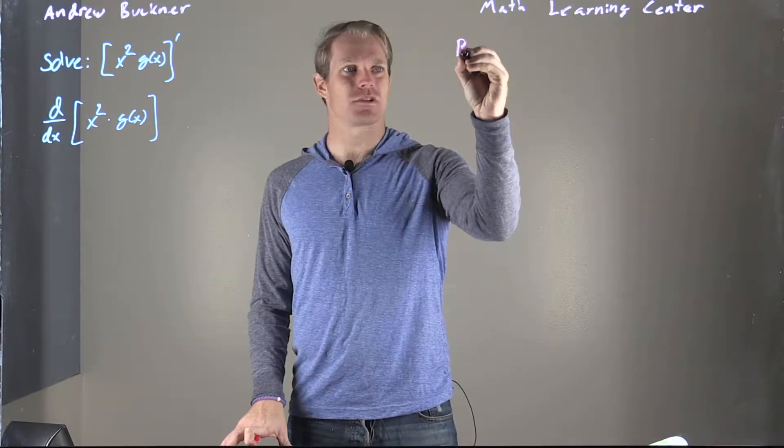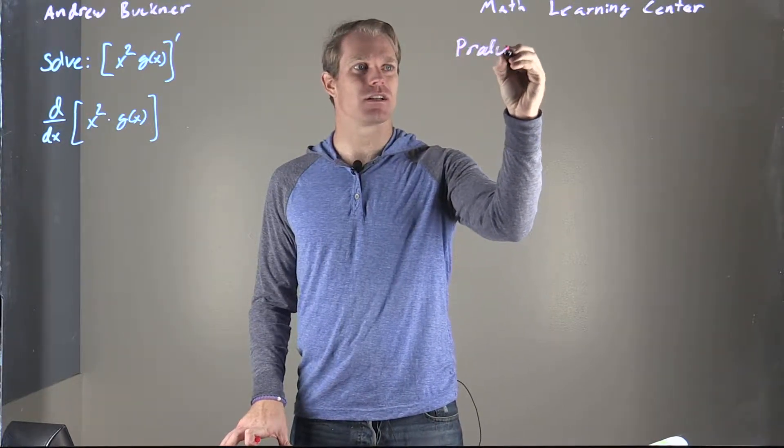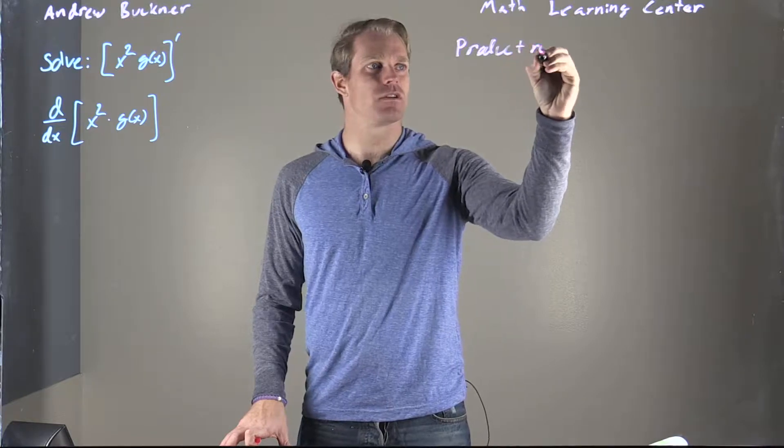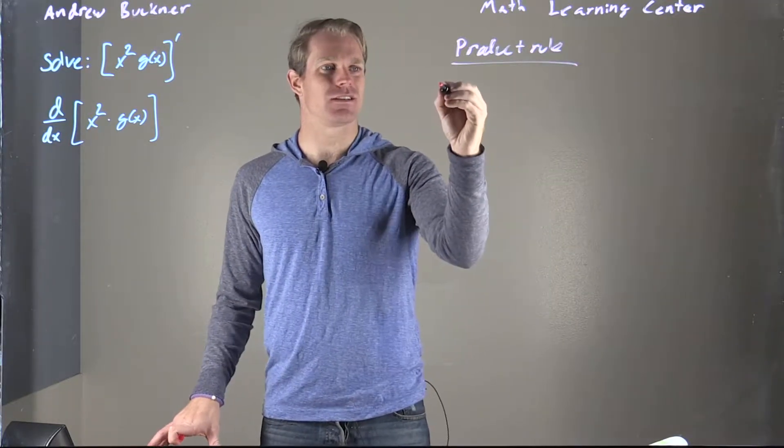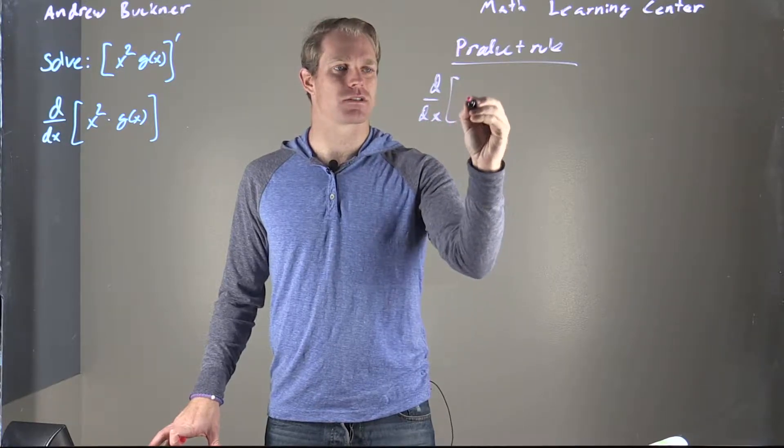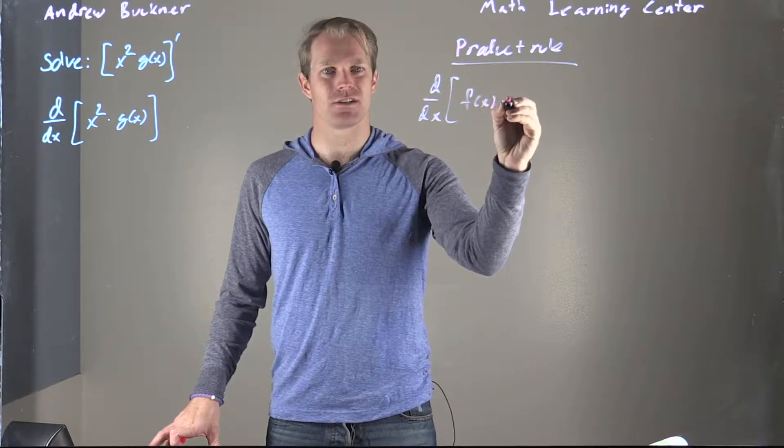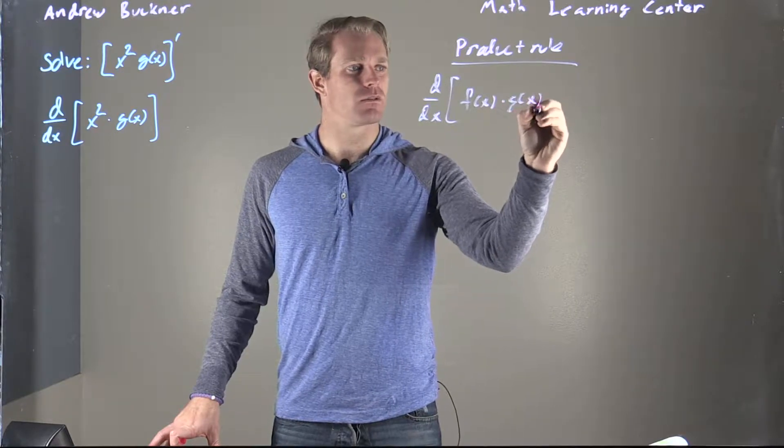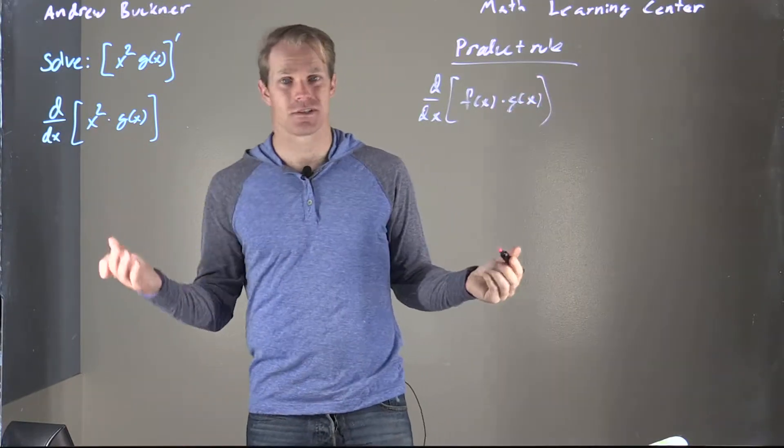So then I'm just going to write down the product rule again like I did in one of the previous videos. Where what the product rule will state is I've got the derivative with respect to x of two functions here. We're going to have f of x and g of x. Which coincidentally for our problem, we do have a g of x.